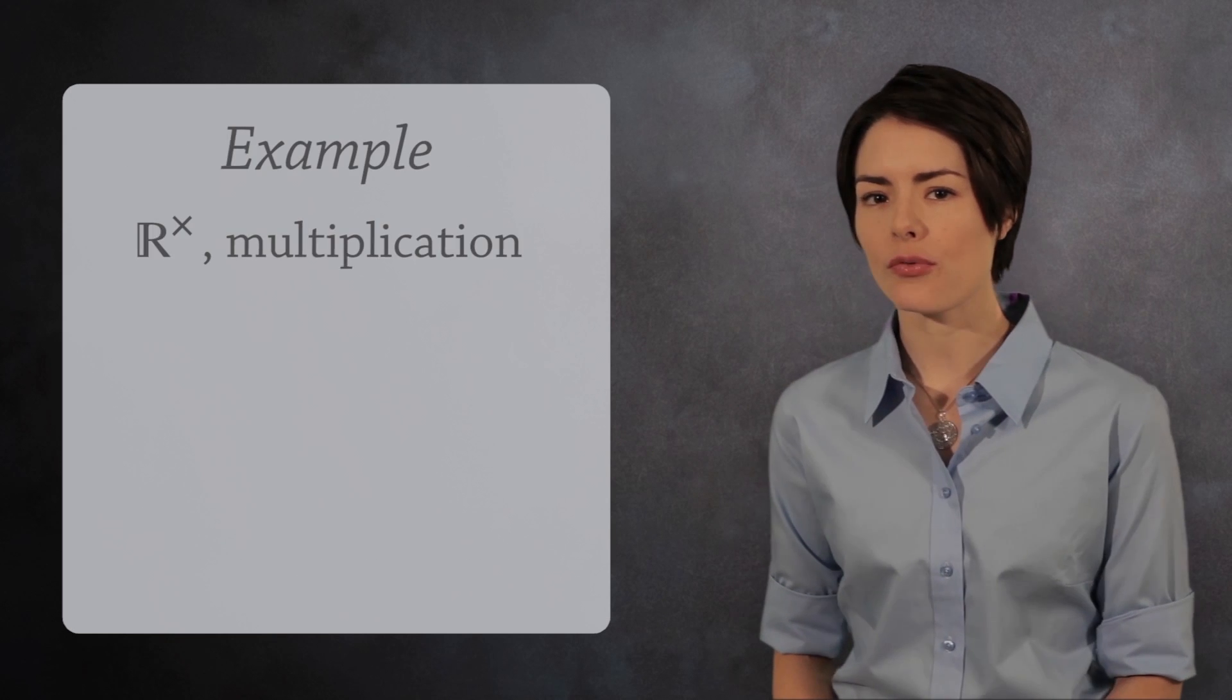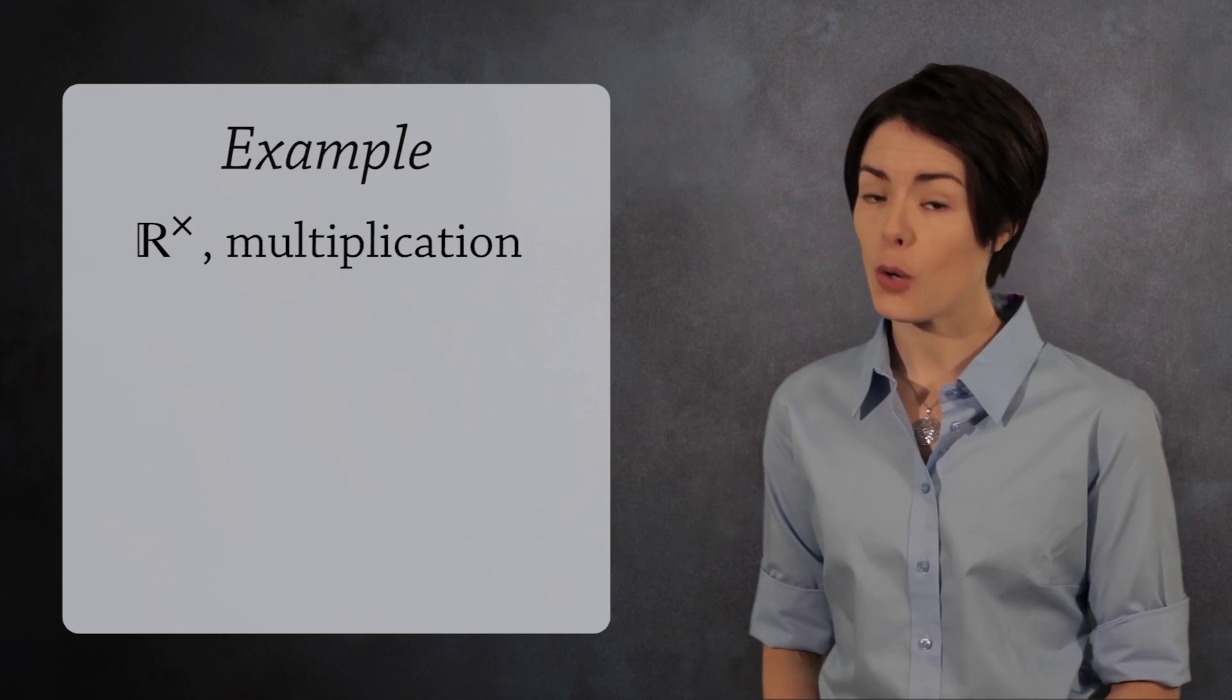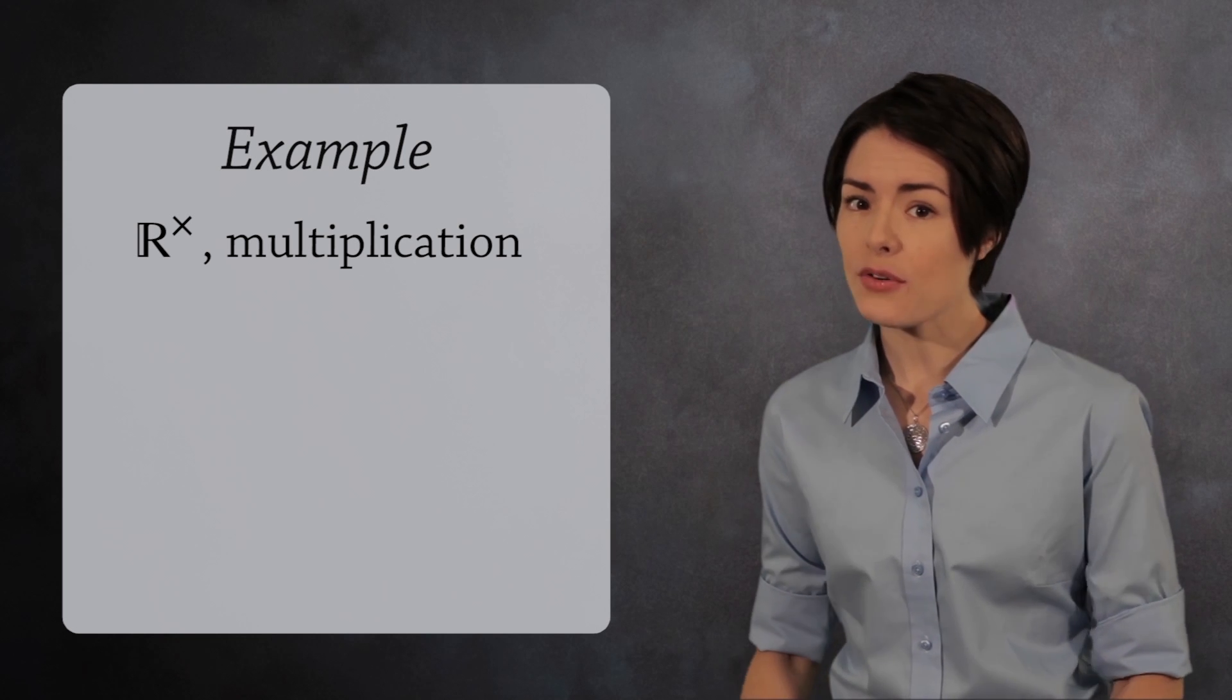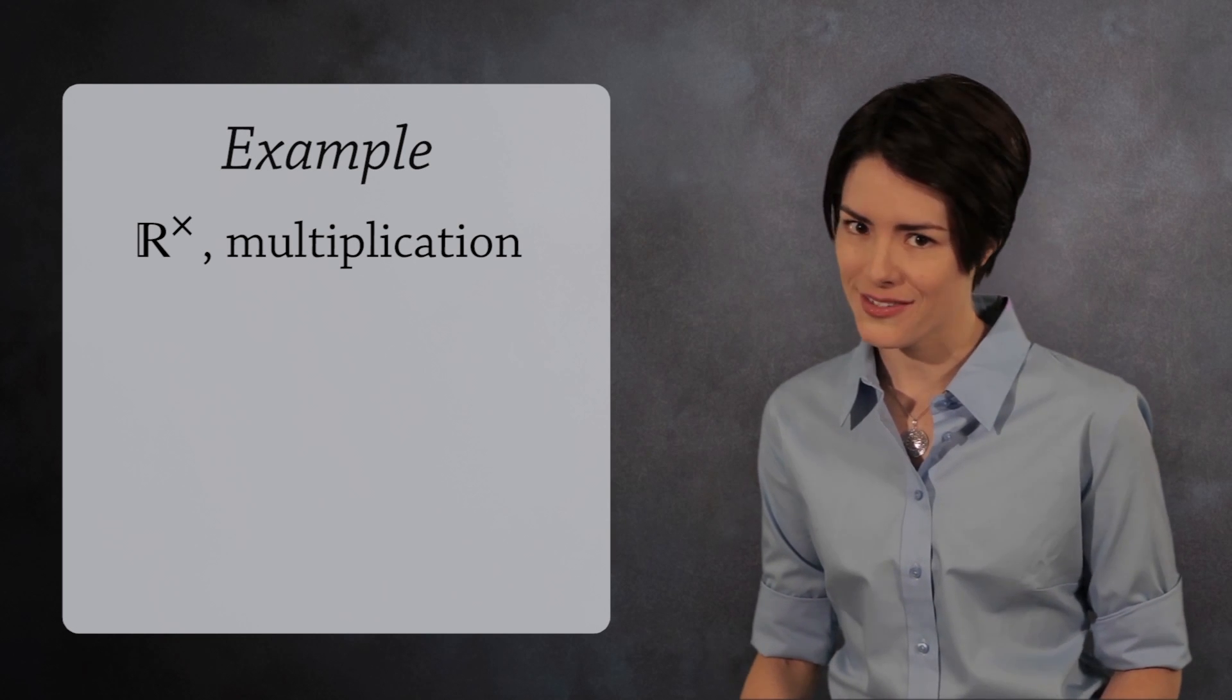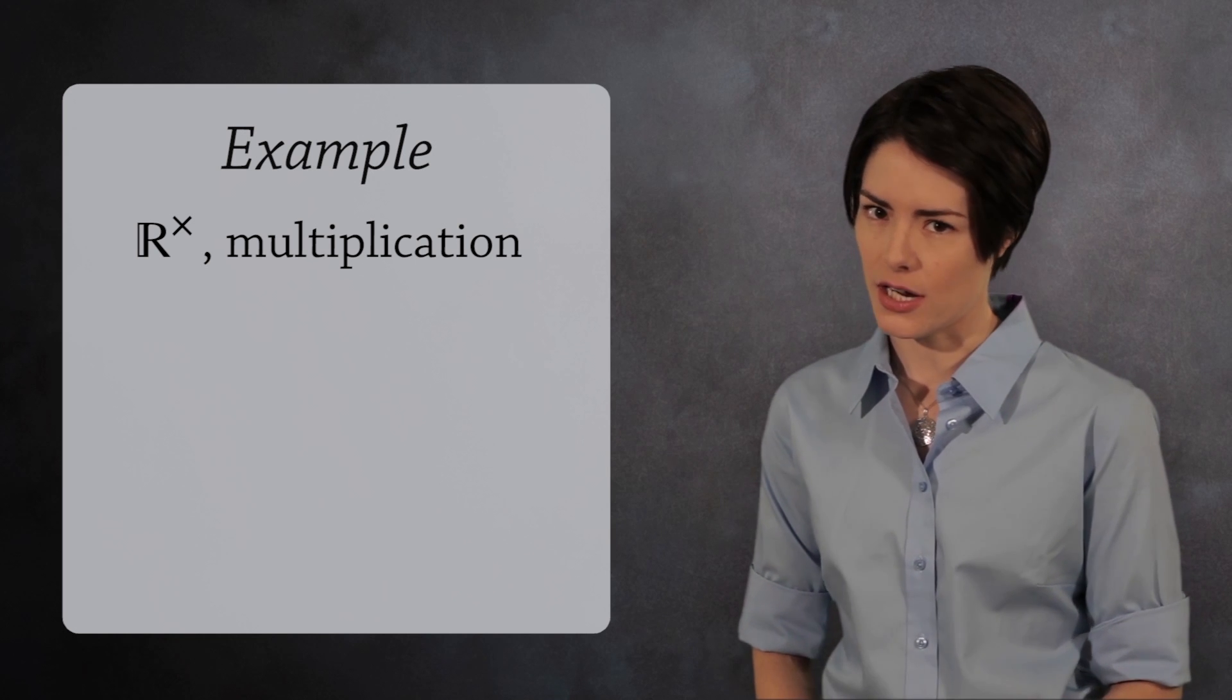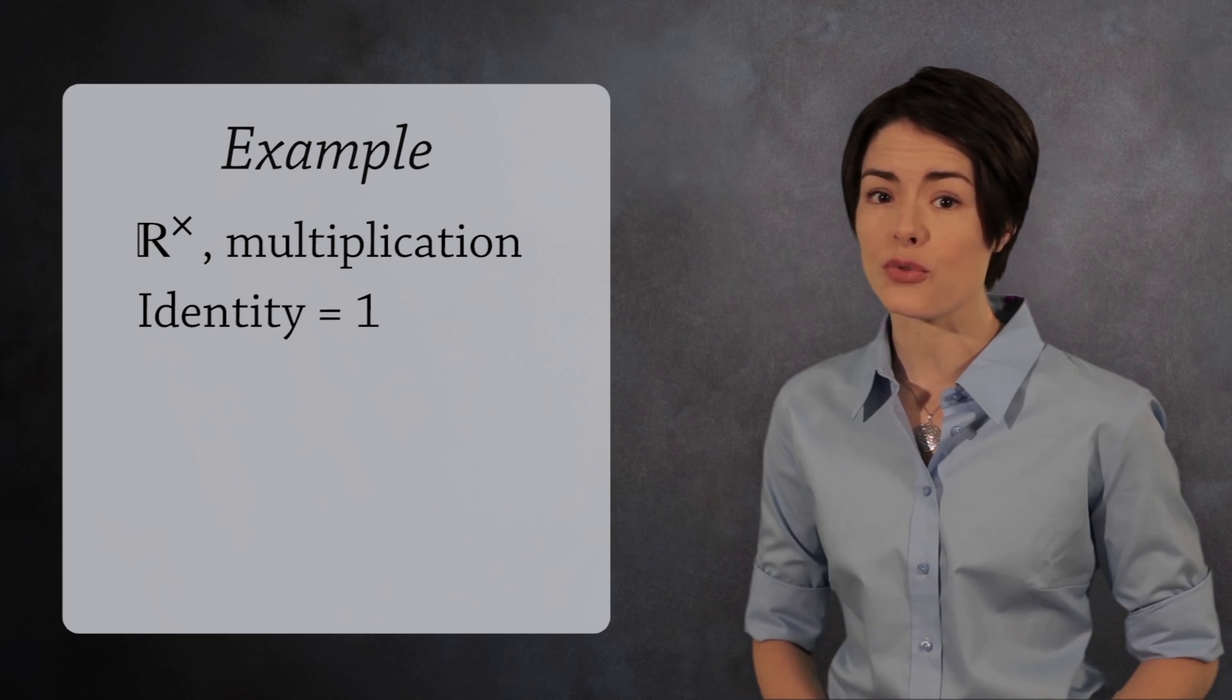The non-zero real numbers form a group under multiplication. We have to omit zero because you cannot divide by zero. Zero does not have a multiplicative inverse. We indicate that we are omitting zero with a tiny multiplication symbol above the r. The identity element in this group is 1.